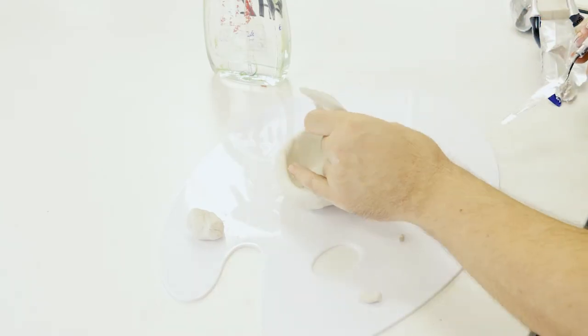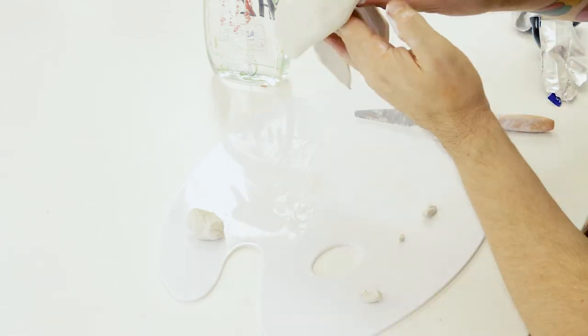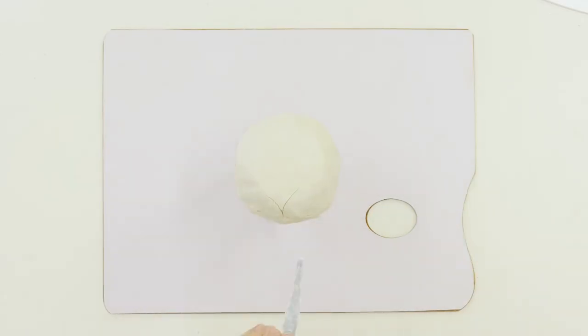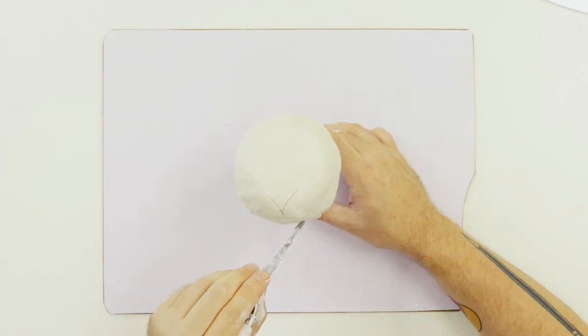Once we are finished with this stage we have to let our little friend dry. A good way to do this is to sit it upside down on a tall glass.